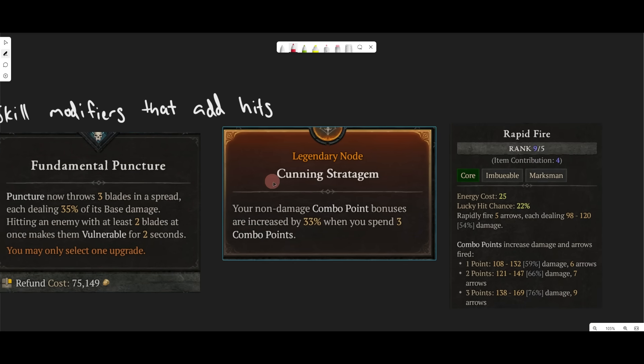Or for example, Cunning Stratagem, it increases the amount of Arrows, if you're using Combo Points, from 8 to 10. So it says 9 here, but it's actually 10, based on video evidence. And that just gives us more bullets, more hits, more chances to Lucky Hit.